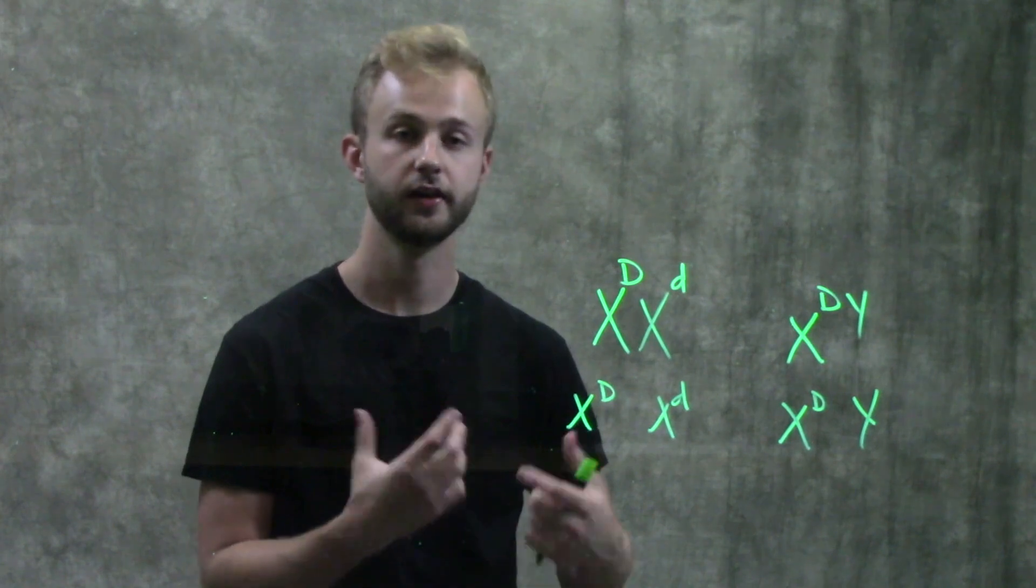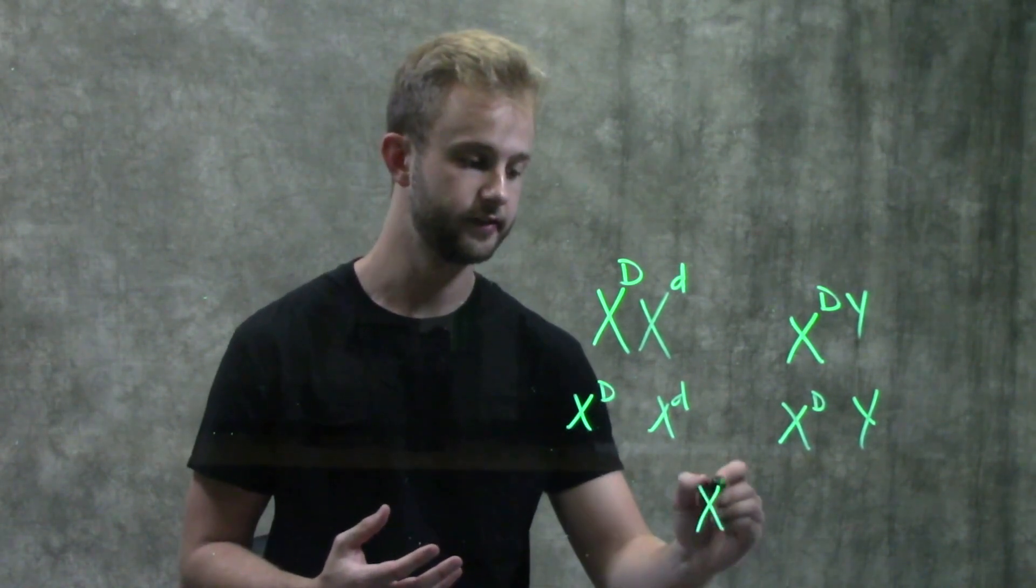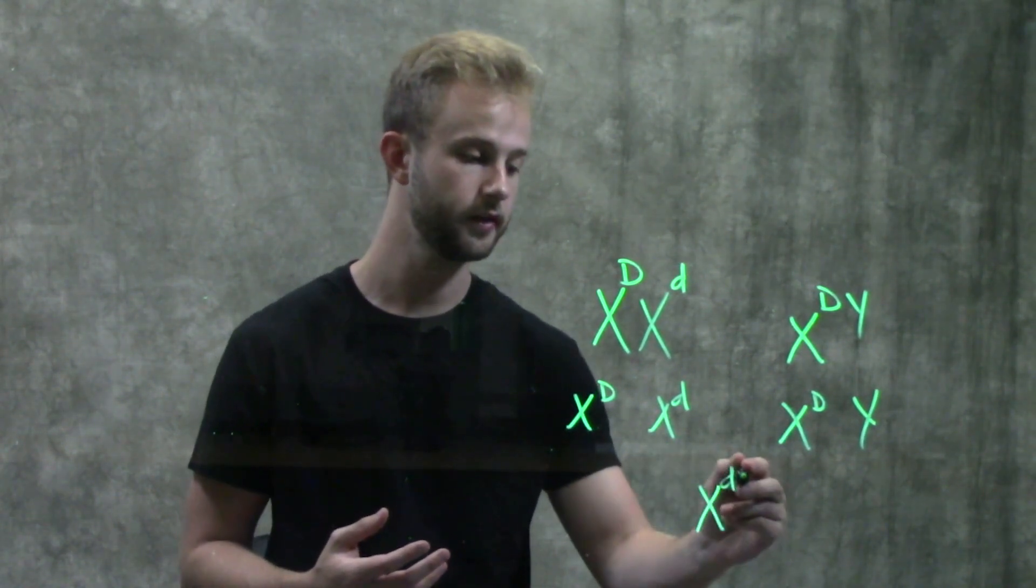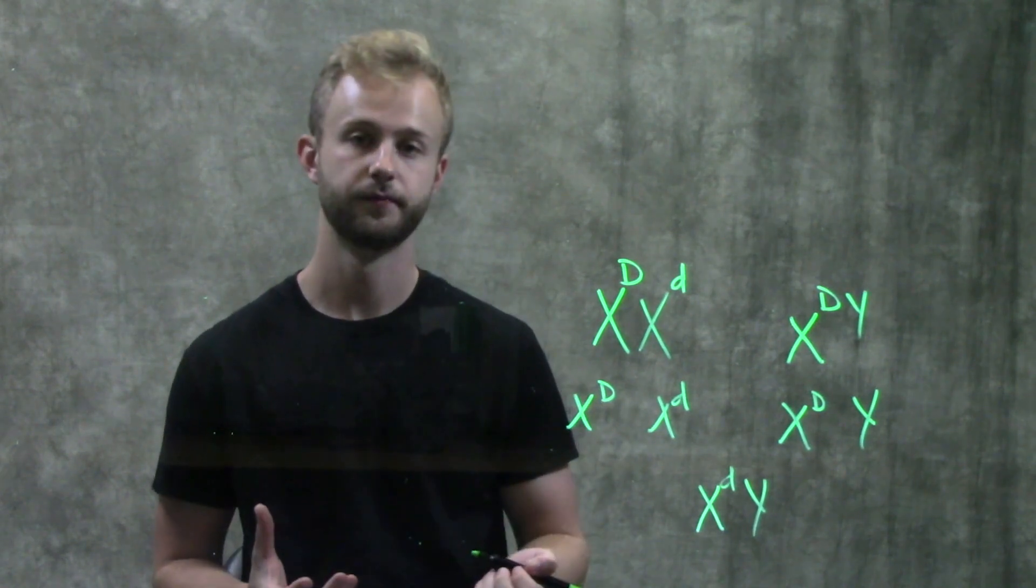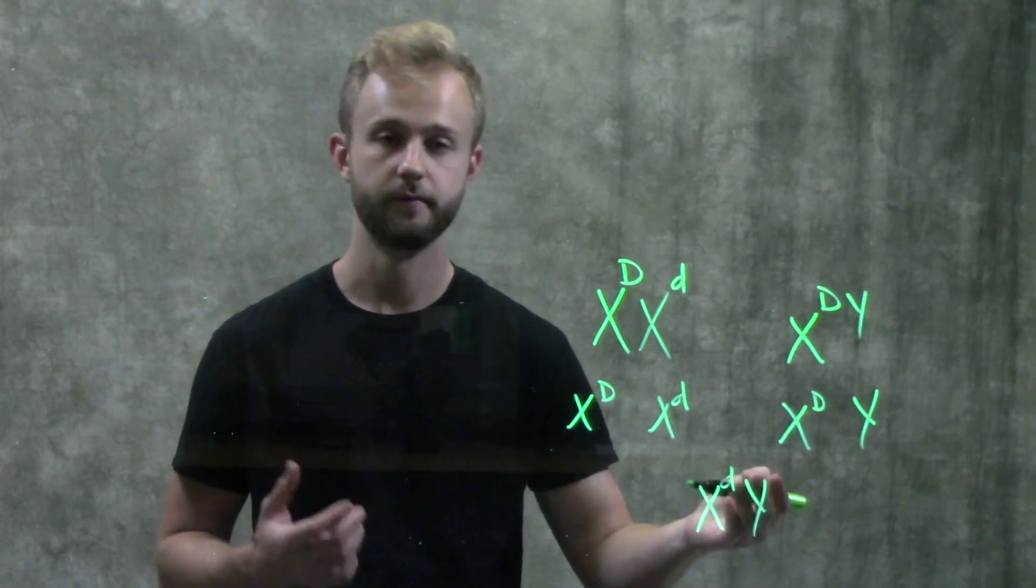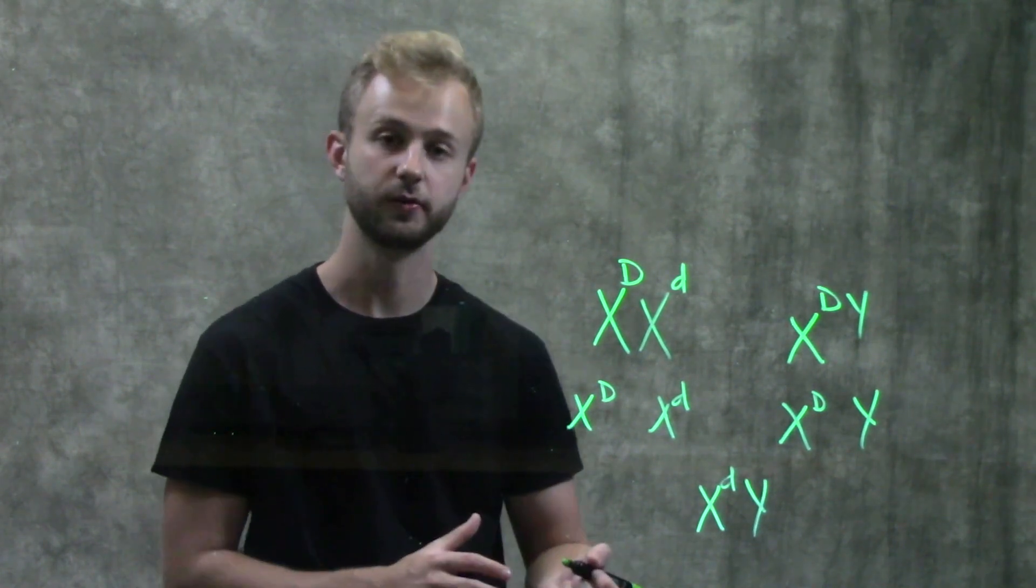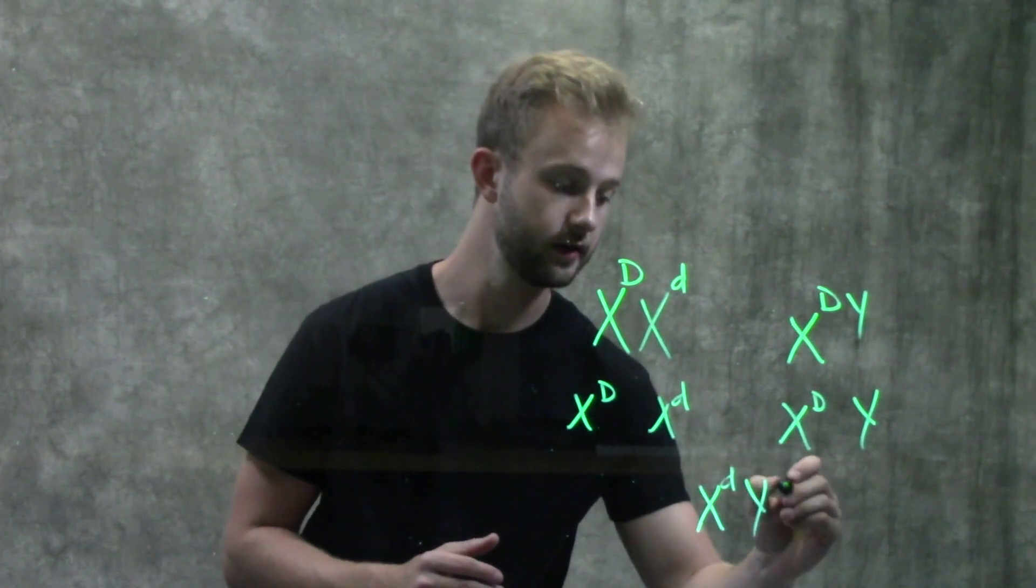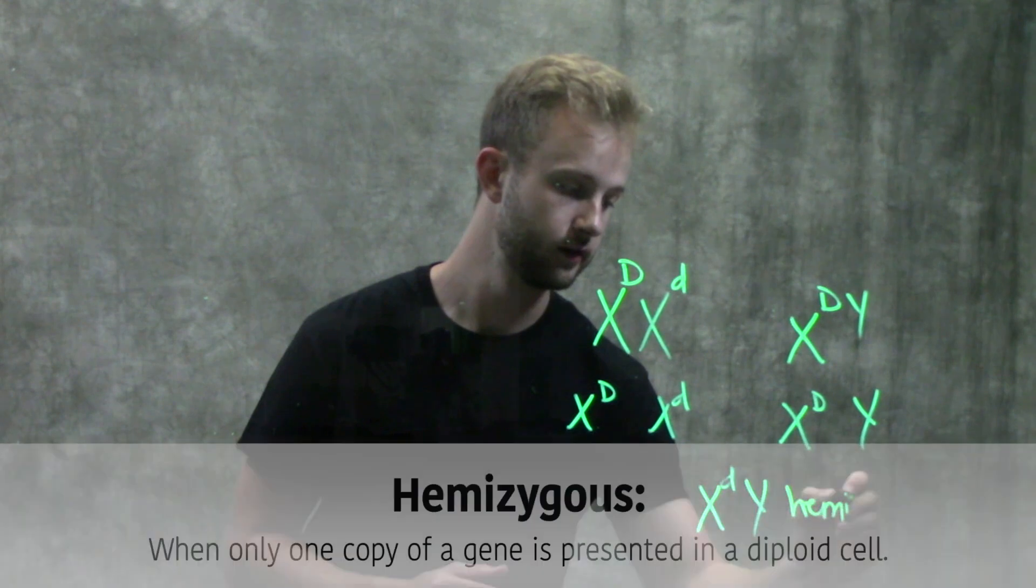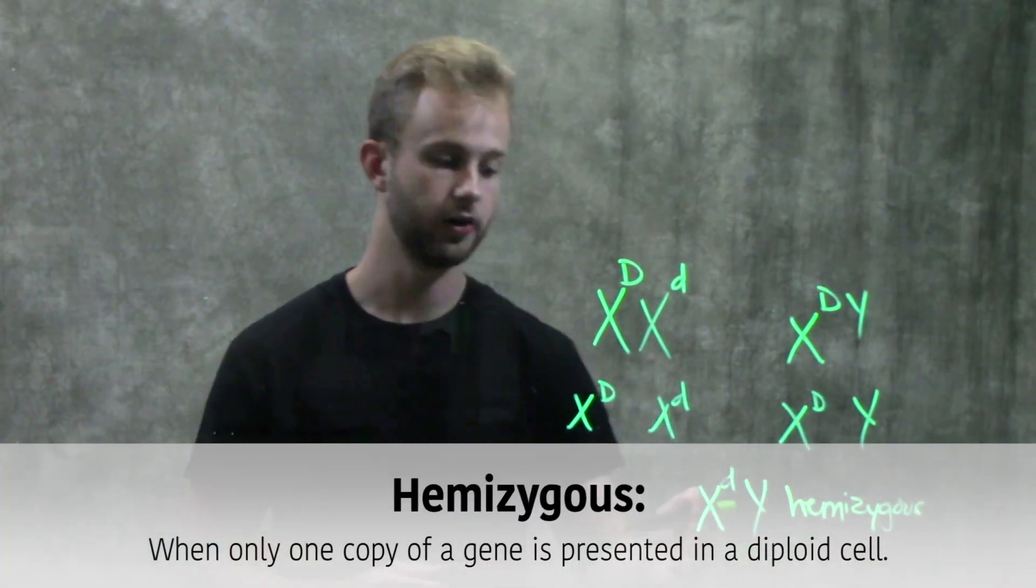So let's say their first child is a boy and he gets the recessive allele from his mother and the Y from his father. So this boy is going to be colorblind.